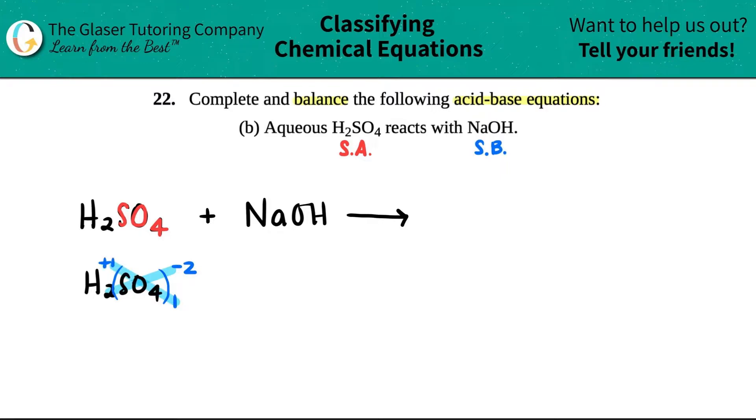So now I have H as a plus one and SO4 as a two minus. Those were the ions that came to form H2SO4. And you can just double check, right? H is in group one. It wants to be a plus one charge. And sulfate is always a two minus. So we did it correctly.